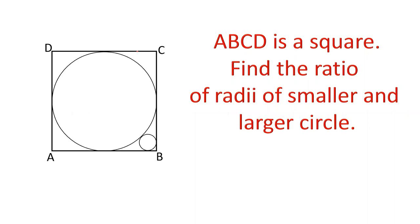Today's question: there is a circle in a square touching all four sides internally. There is another circle touching two sides and the first circle. We have to find the ratio of their radii. Let's see how we can solve this question.